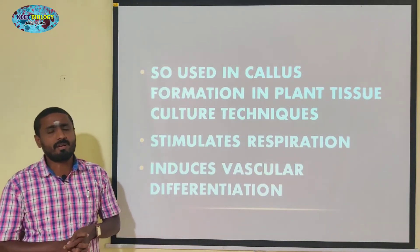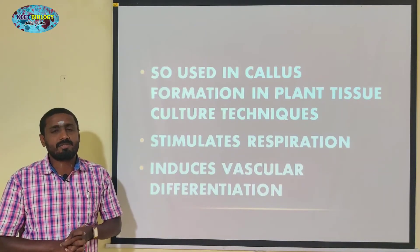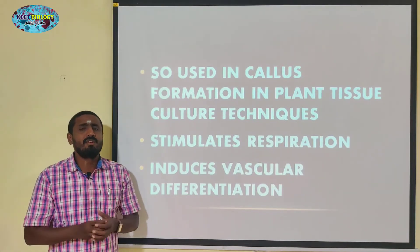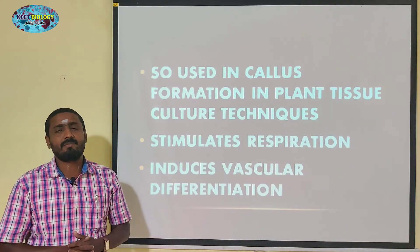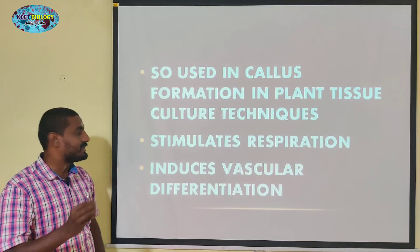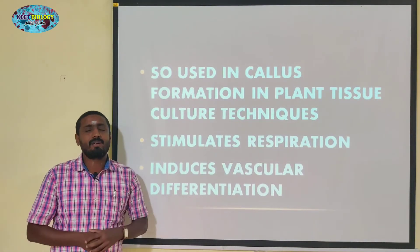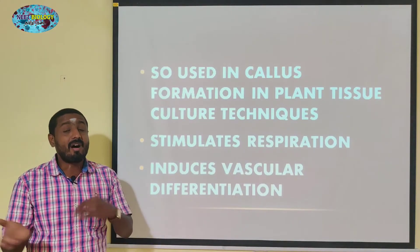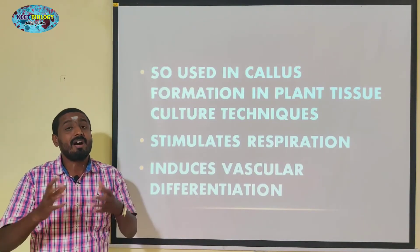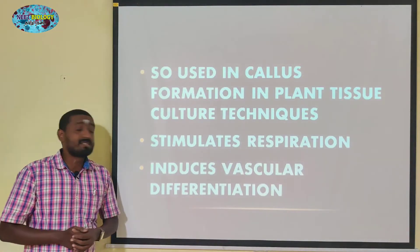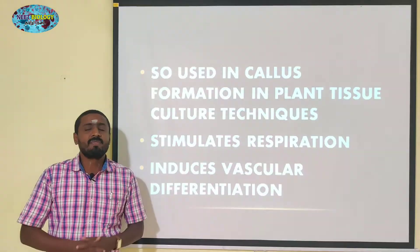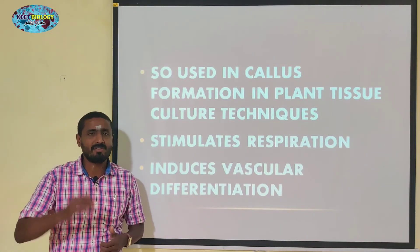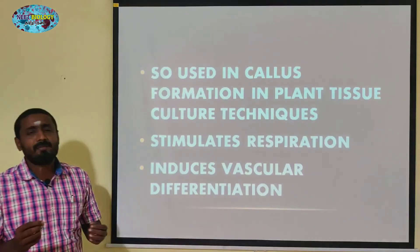If you have a cell division, respiration is okay, but the respiration rate is increased and auxin is helpful. If the seed is germinated, you will need respiration. Vascular differentiation involves xylem and phloem. If you know the differentiation, you will understand the respiration of organs.